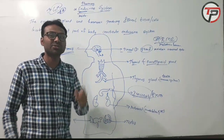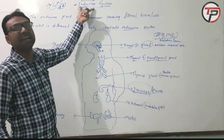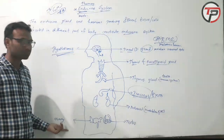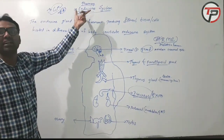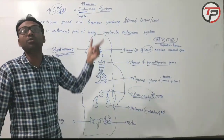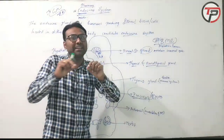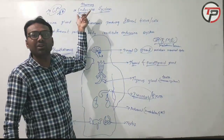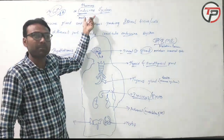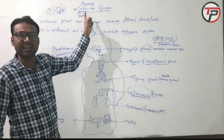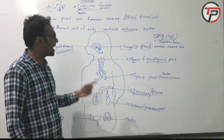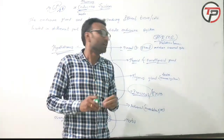Also, the testis is also acting as an exoendocrine gland. Endocrine glands release hormones without a duct — a duct means a small pipe. Without a pipe, the endocrine system releases hormones, which are chemical messengers, through the bloodstream. Glands without ducts are called endocrine glands, whereas exocrine glands release secretions through ducts.